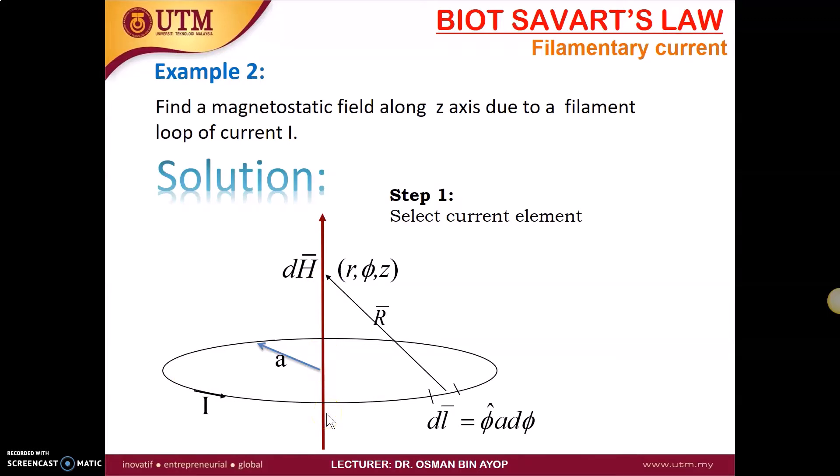So what we are going to do is the first step we have to select the current element. This is the current element. This is a sample of current. The DL is equal to in direction of phi A D phi because the radius is A.